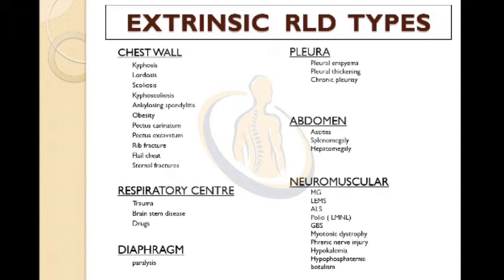Moving forward: respiratory center problems, that is trauma, brainstem diseases, and drugs. Then followed by diaphragm — diaphragmatic paralysis is also a type. The pleura includes pleural empyema, pleural thickening, and chronic pleurisy.